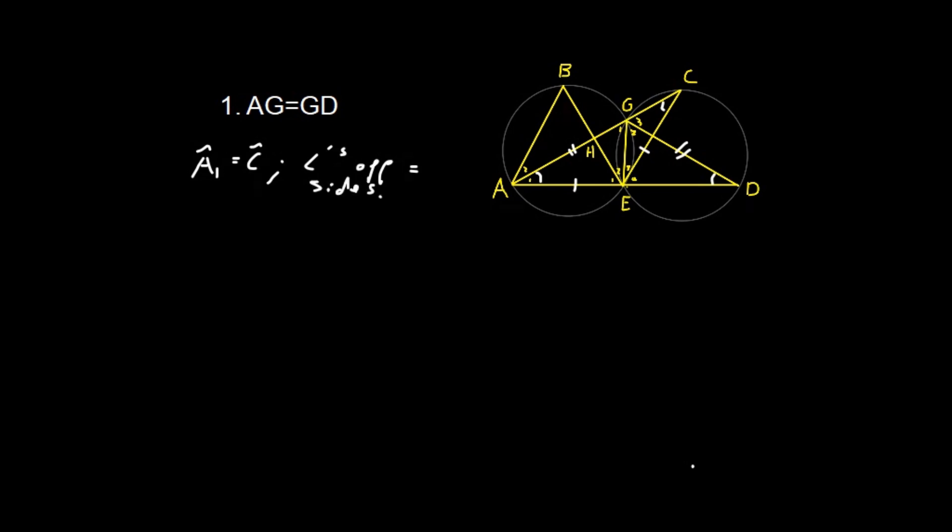And our reason would be angles opposite equal sides. Okay, great. Now we can say, well, angle C is equals to angle D. And our reason for that would be angles in same segment. Great. And because C and C are equal, we can now say, well, that means A1 is equals to D. And they did not ask us for angles. They asked us for sides. So we can say, therefore, AG is equals to GD. And our reason would be sides opposite equal angles.